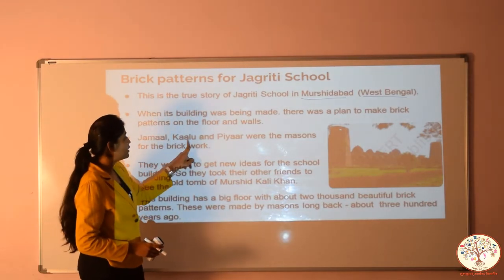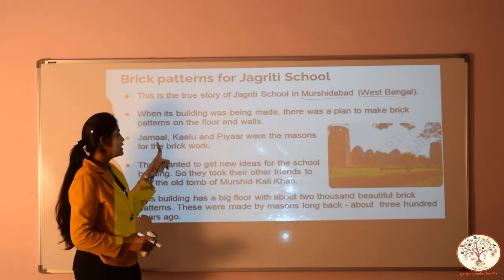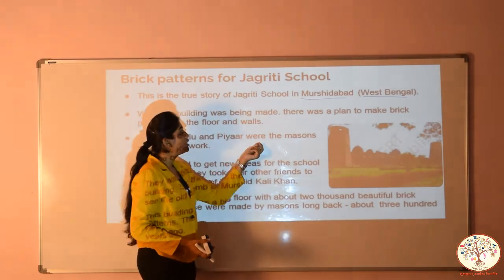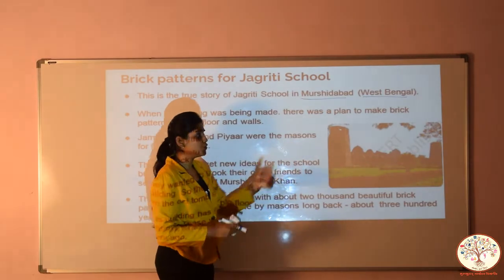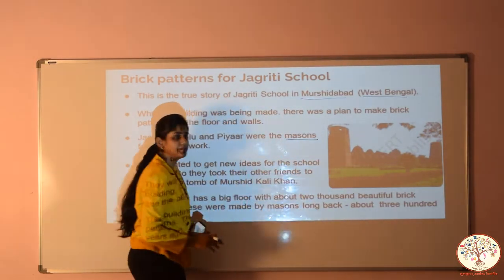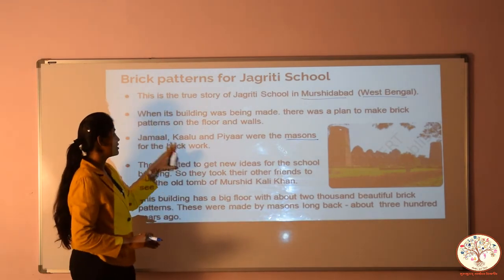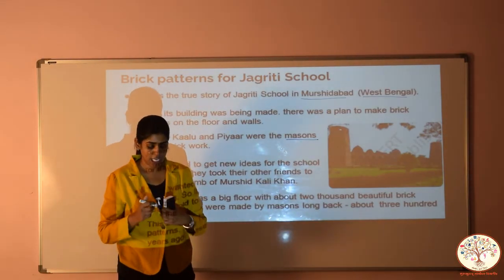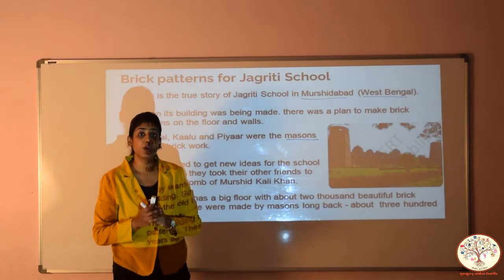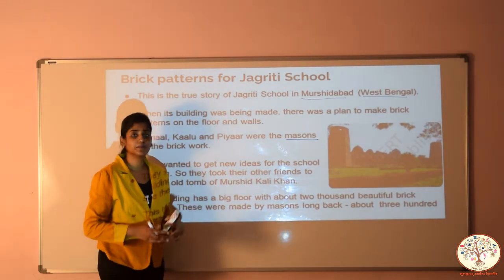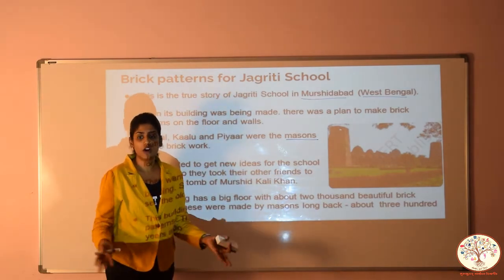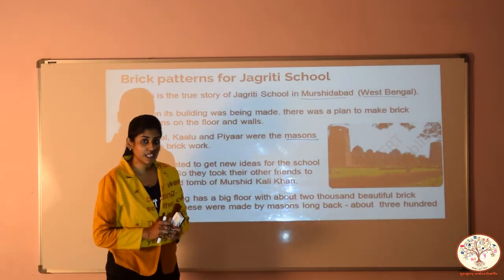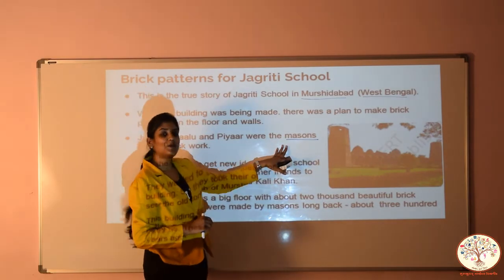Jamal, Kalu and PR — these were the persons — were the masons for the brick work. Do you know what is masons? Jamal, Kalu and PR were the masons for brick work. Masons कौन होते हैं? Masons are the persons who design brick walls or make walls of brick or floor patterns. जो भी ईंटों का काम करते हैं — आपका घर बनाओगे तो आपके घर की walls जिसमें भी बनाई हैं, उस person को हम बोलते हैं masons.